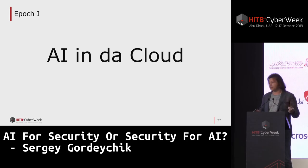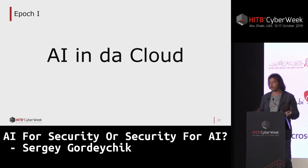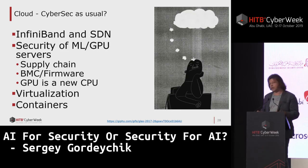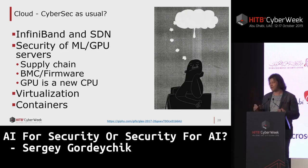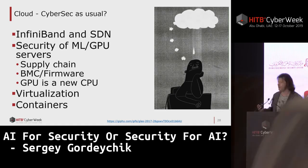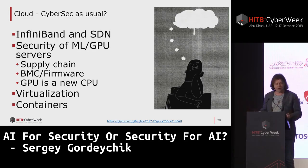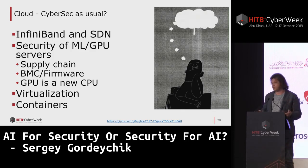The first thing to address is the cloud. Most AI applications are now built in the cloud and work in the cloud, so we should secure the cloud first. One of the interesting things related to cloud security is a new type of network — the InfiniBand software-defined network, which is now everywhere in the cloud. Next is security of machine learning and GPU servers, because these are new things deployed everywhere. And of course, virtualization and containers.